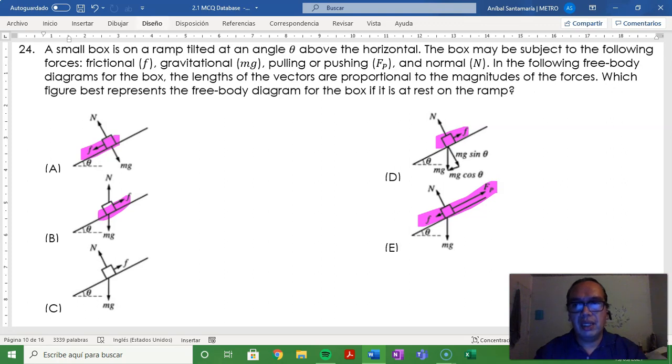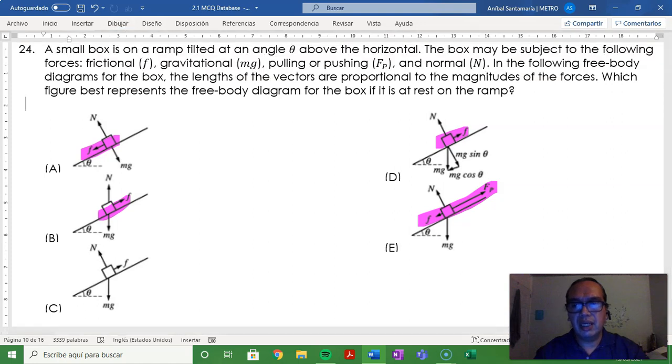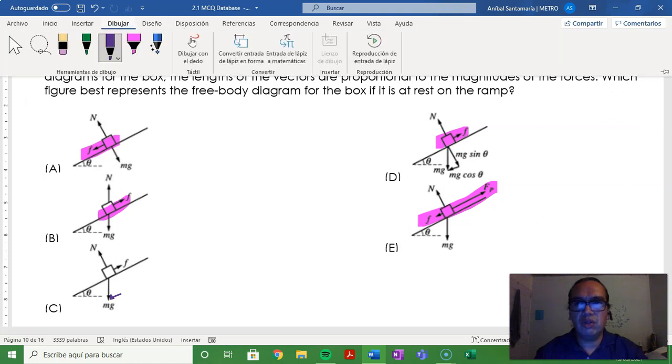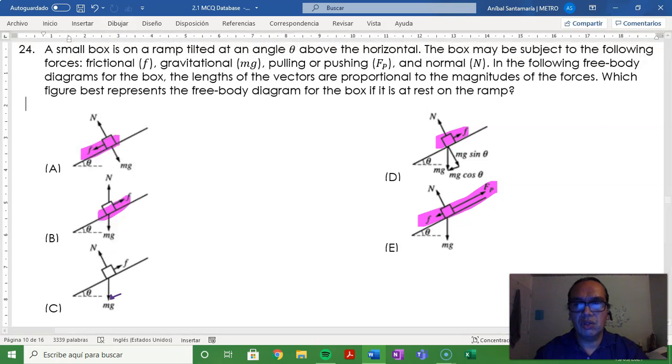However, in option C, it is clear that there is a component along the x direction that opposes the friction, and it is reasonable to think that they are of equal magnitude. So, this could be a situation at rest.